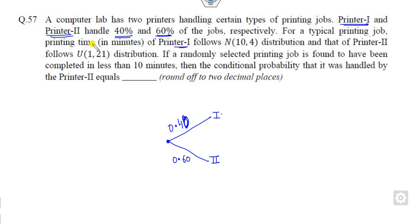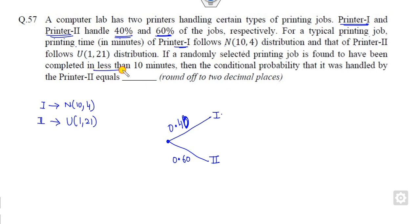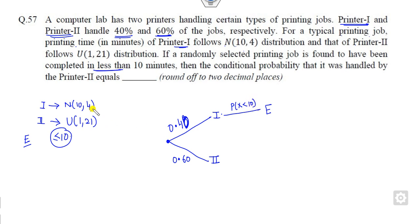For Printer 1, the printing time follows a normal distribution with mean 10 and variance 4. Printer 2 follows the uniform distribution. If you select randomly and find it completes in less than 10 minutes, that is the major target. Let this be event E — what is the probability that it completes in less than 10 minutes?